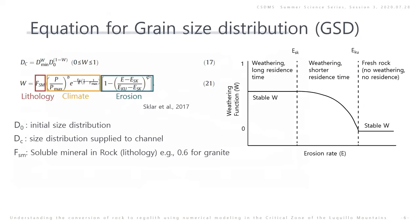Now I'm going to talk about the theoretical information used. The upper equation describes the relationship between grain size and weathering. The bottom equation is the weathering function W, which includes lithology, climate, and erosion properties. At this time, I focus on the impact of erosion properties.